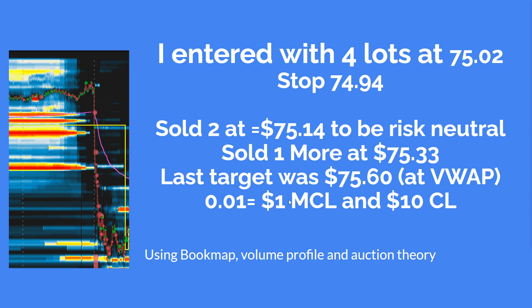I entered with four lots at $75.02. I had a very tight stop at $74.94. I sold two at $75.14 to get risk neutral and probably covered my commissions. I sold a third lot at $75.33 and had a target near VWAP at $75.60. For those not trading CL, the micro version is $1 per tick and the full size contract is $10 per tick.